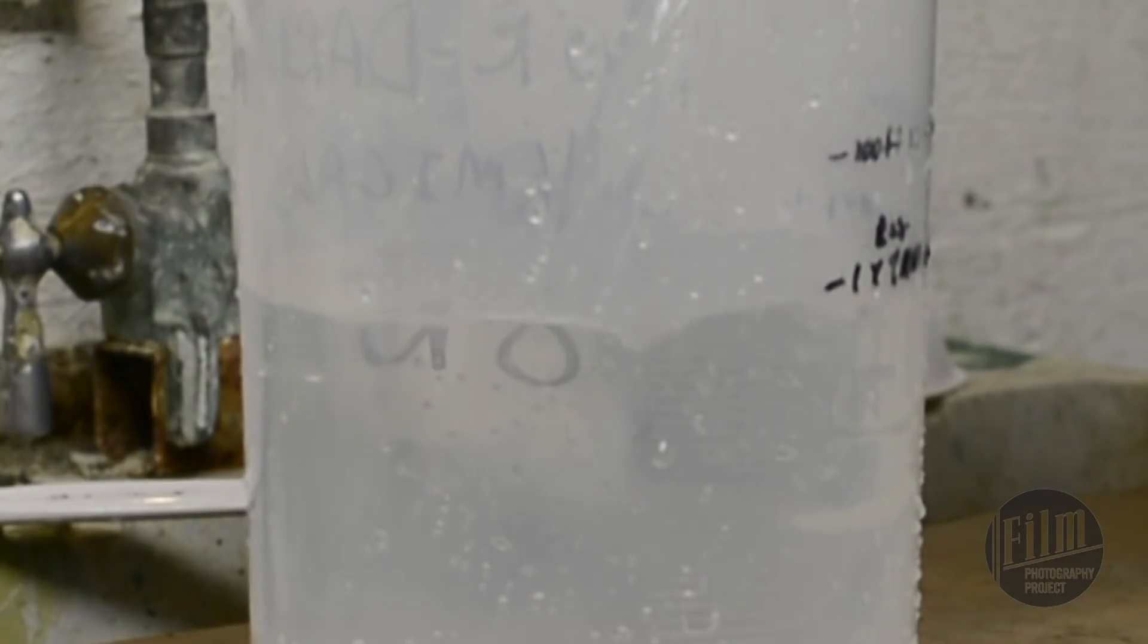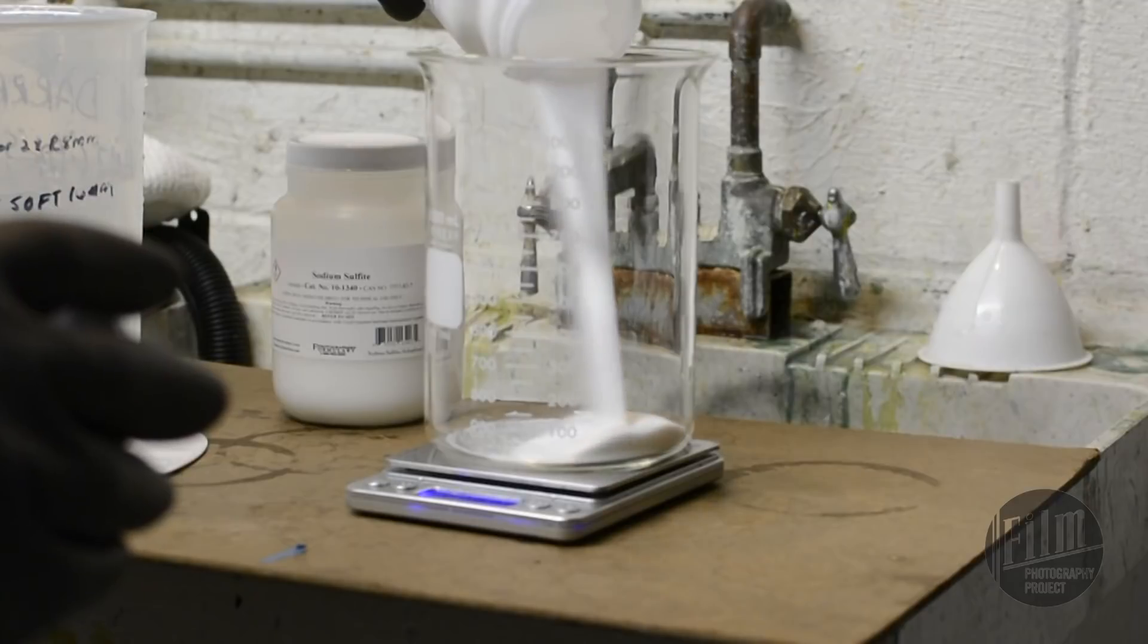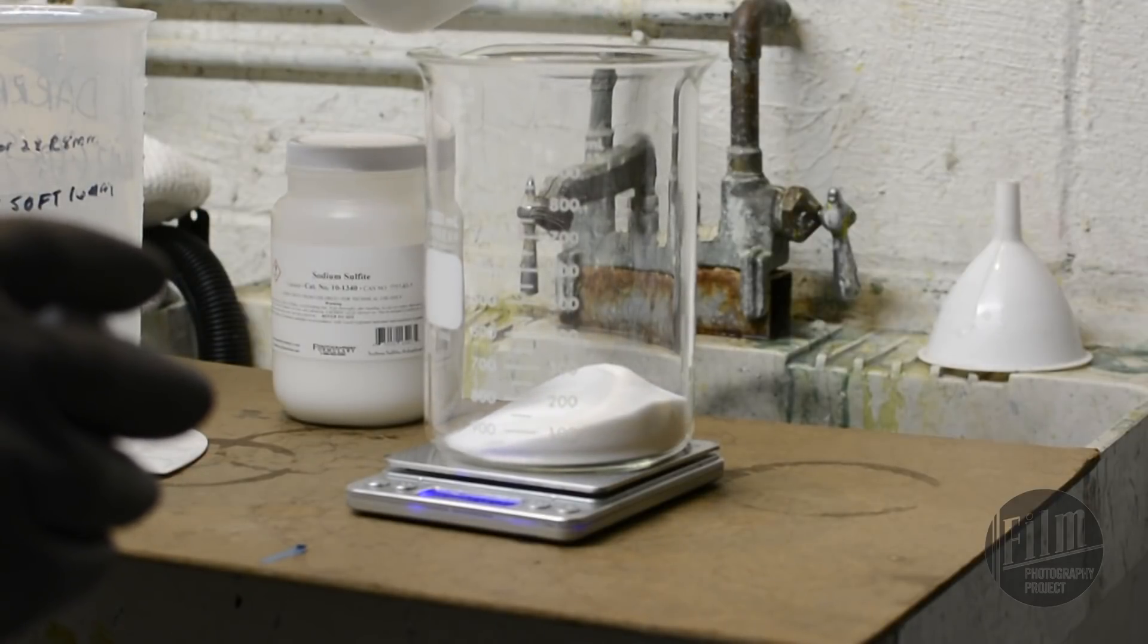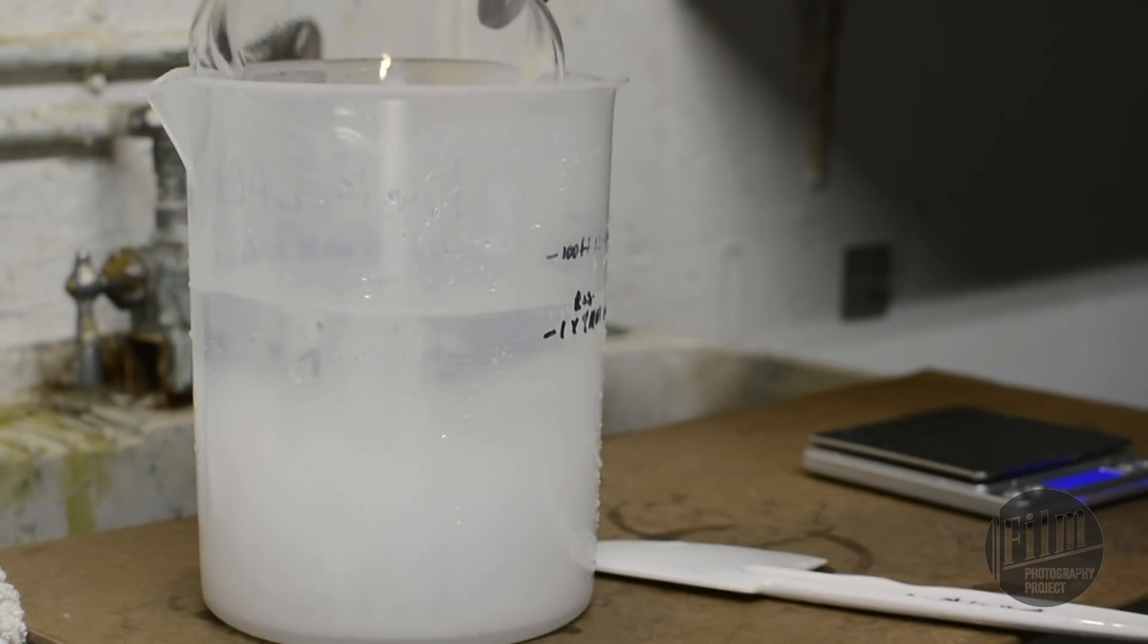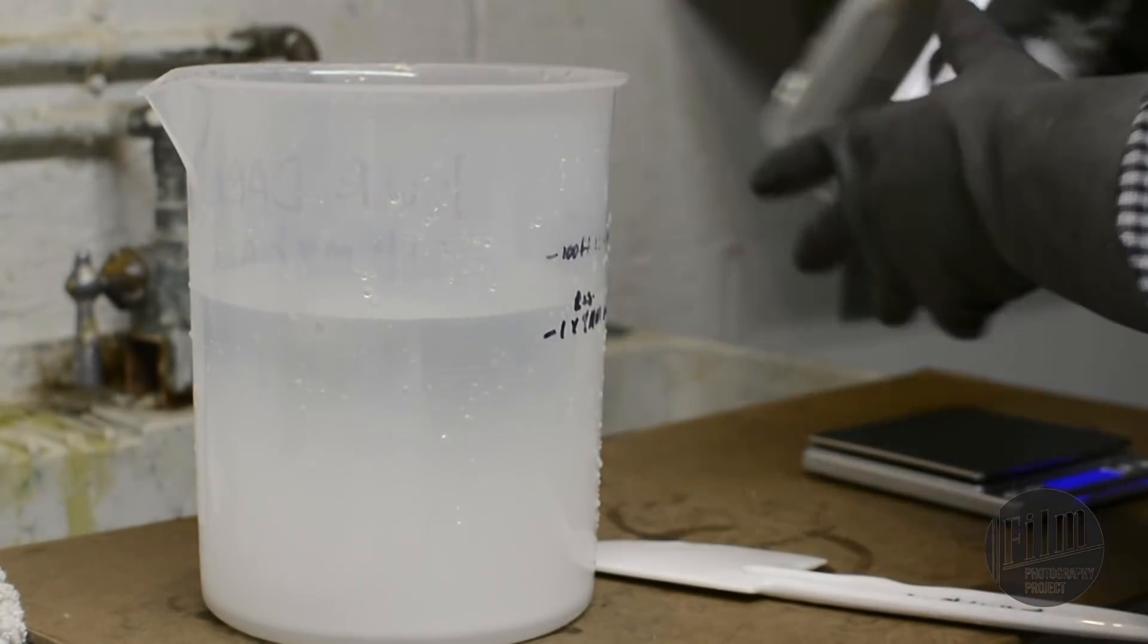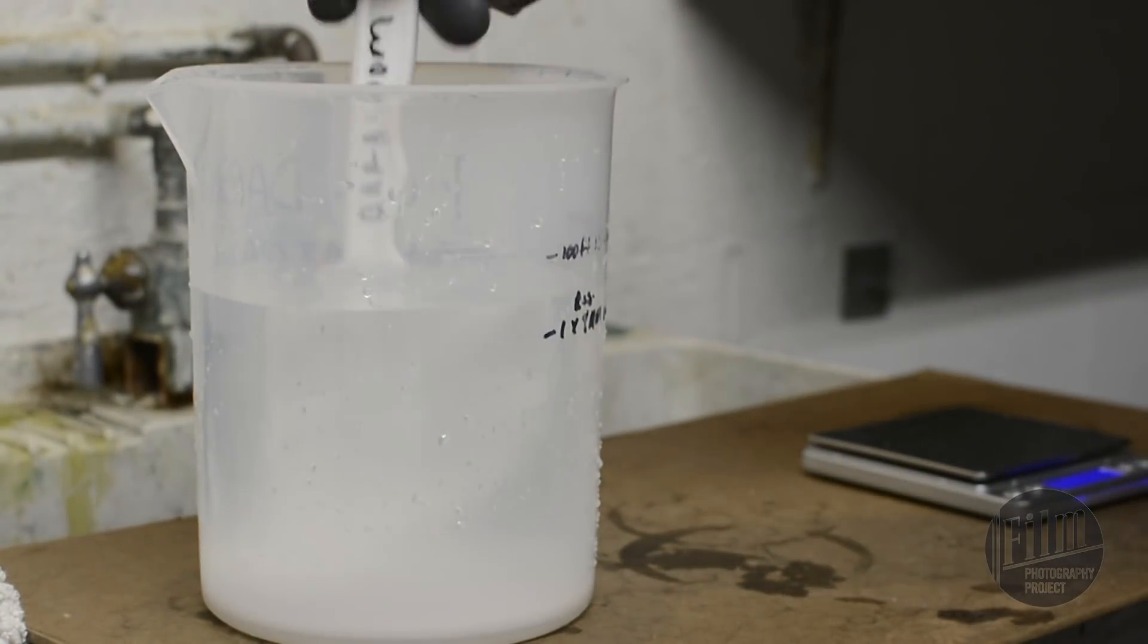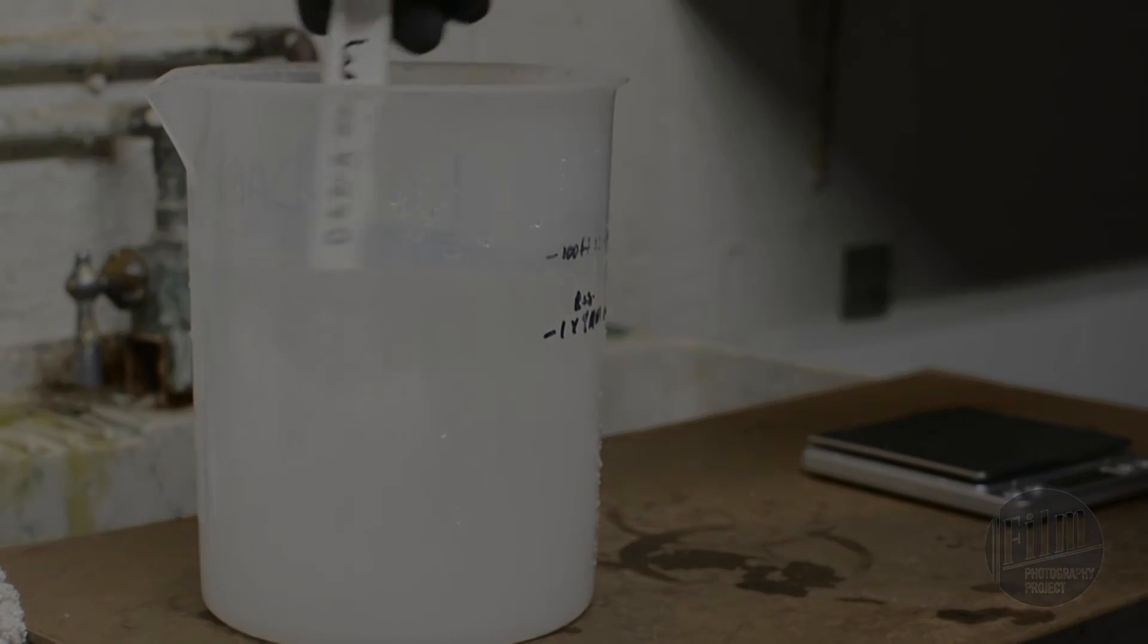The clearing bath is super simple. Measure out 1500 milliliters of distilled water. Then measure 140 grams of sodium sulfite and add it to the water. Stir it carefully until it's completely dissolved. You should already have your fixer ready to go, and the wetting agent comes pre-mixed. So now we're ready to start developing.